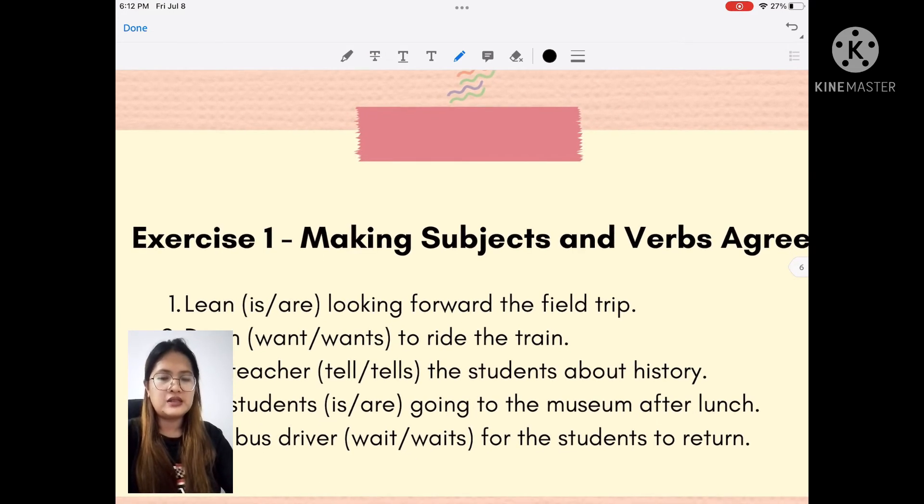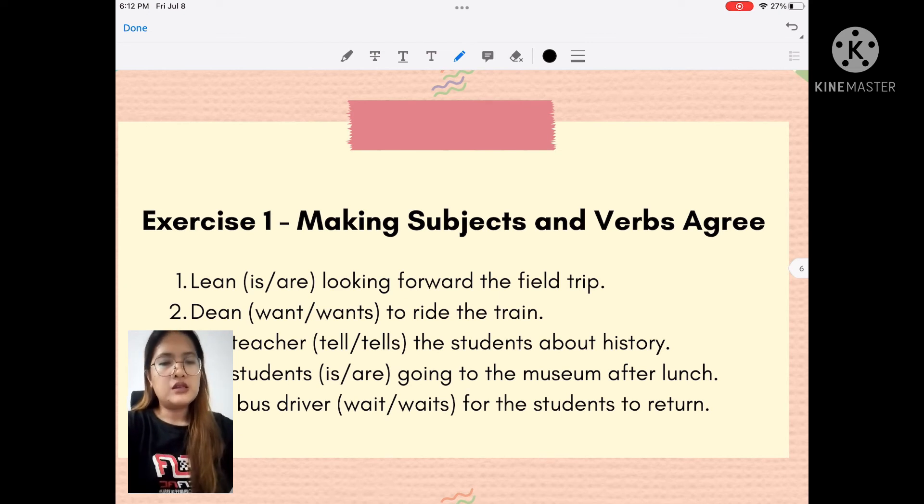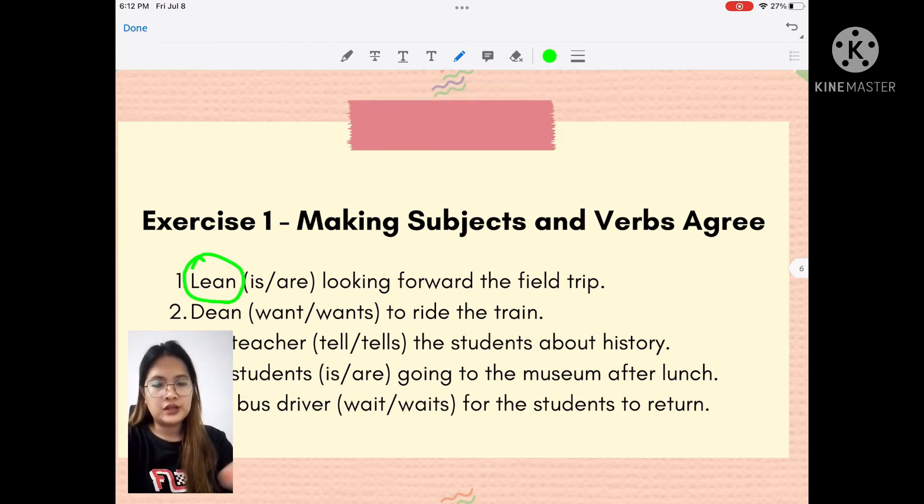So, again, when you see of, in, at, on, and other prepositions, the nouns that come after would be disregarded. Hindi siya papansinin sa pag-consider ng verb. Next. Let's have the exercise next. So, we just answer with me para mag-ma-practice kayo. So, making subjects and verbs agree. So, Lian is, are, looking forward, the trip. This is your subject. Where's your subject? It's green. It's Lian. And, isa lang yan. So, kung isa lang yan, wala siyang S, what should be the verb? Correct. Yung may S, is. Ayan. So, your answer is, Lian is, looking forward, the field trip.